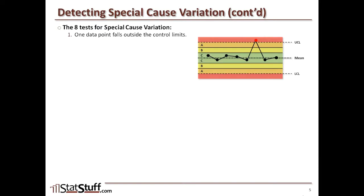The first test: one data point falls outside of the control limits, out in that unexpected region. Any data point that falls outside of any of these zones is going to trigger an error for that test.